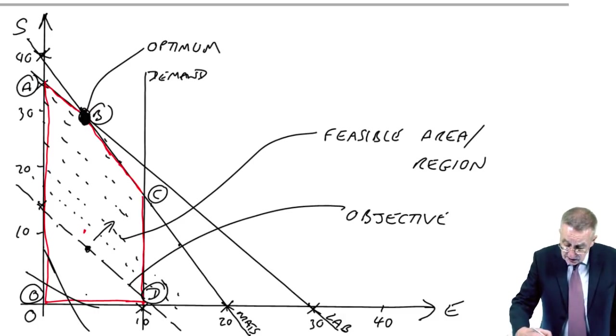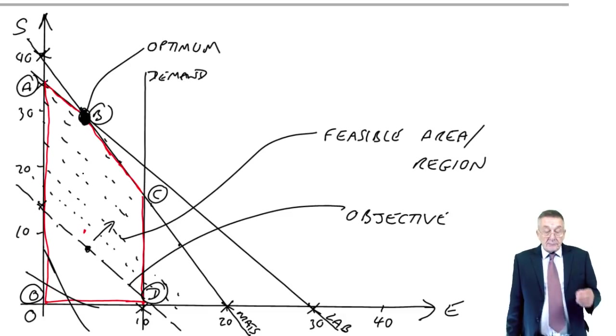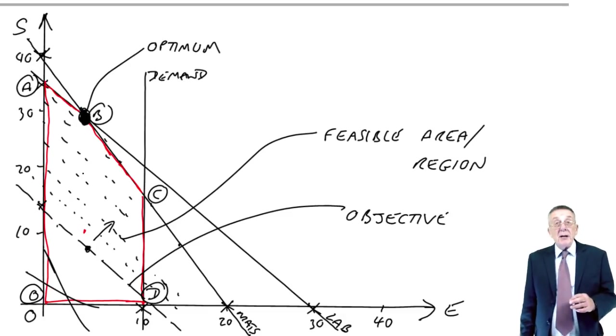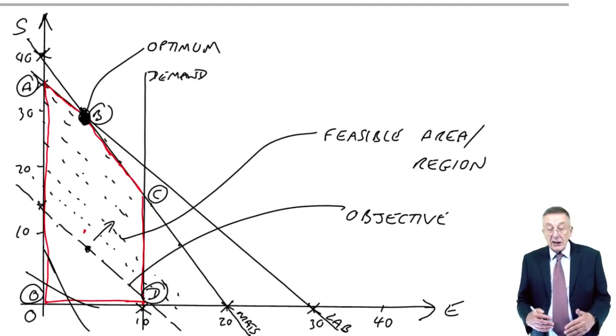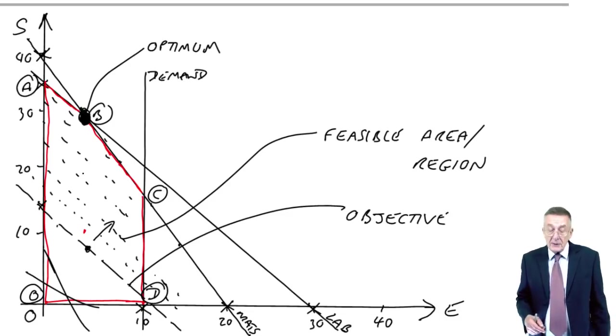You know, with mine, it looks as though S is about 30, E looks to be, I don't know, four, whatever. But you mustn't read it off the graph. You are expected to be able to solve arithmetically whatever the values are, whichever of those corners it turns out to be.